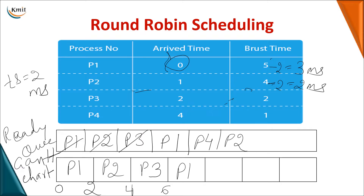Next is P1. P4 is given 2 milliseconds, making the time 8. P4 requires 3 milliseconds but after running for 2, it has 1 millisecond still pending. So P4 is removed from the front and added back at the end of the ready queue since it still requires the CPU for completion.